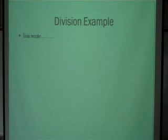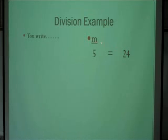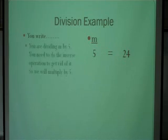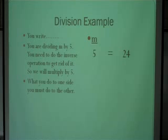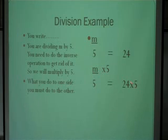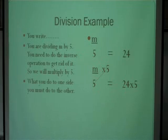Let's do two division examples. You write m divided by 5 equals 24. Since we're dividing m by 5, we have to do the opposite — multiply by 5. What we do to one side, we must do to the other. The 5s cancel out, leaving just m. 24 times 5 equals 120, so m equals 120.